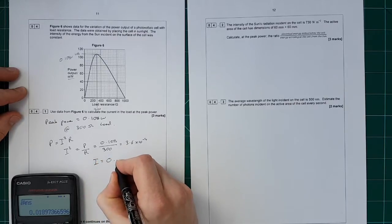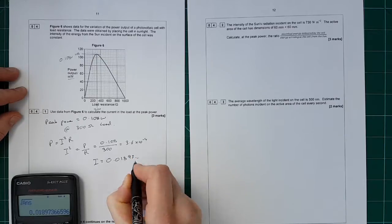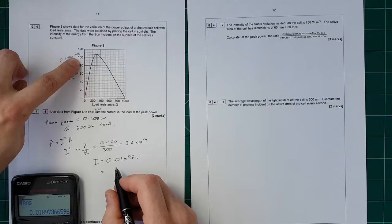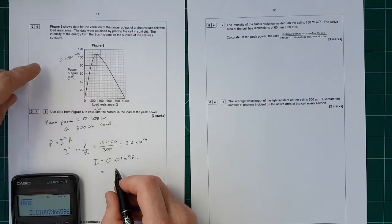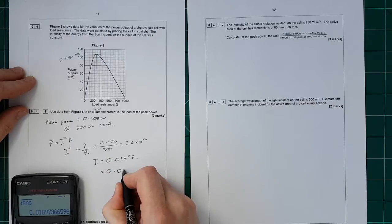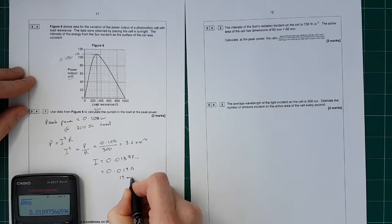So I equals 0.01897... What have we got here? 3 significant figures, 2 significant figures. I'll put it to 2 SF: 0.019 amps or 19 milliamps.